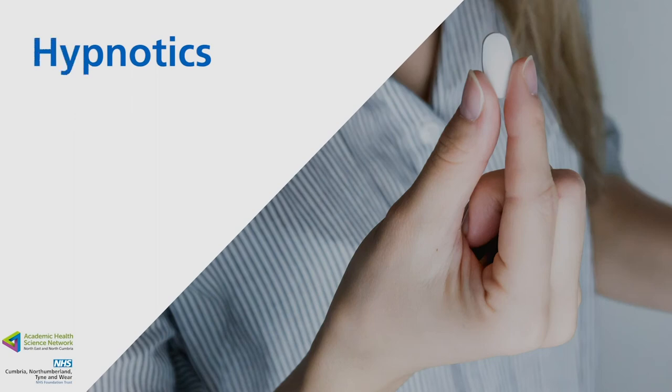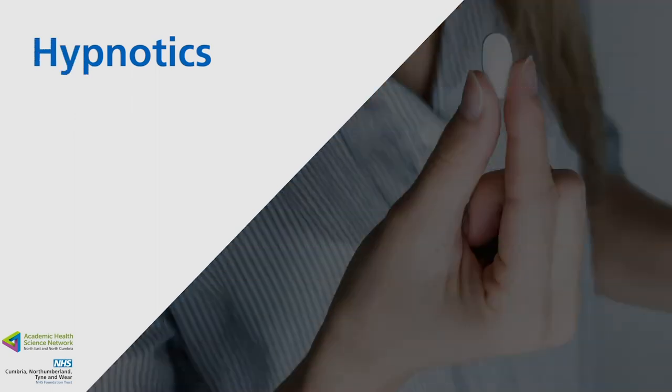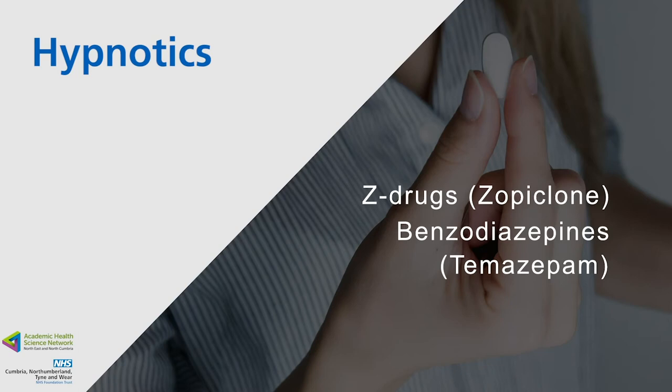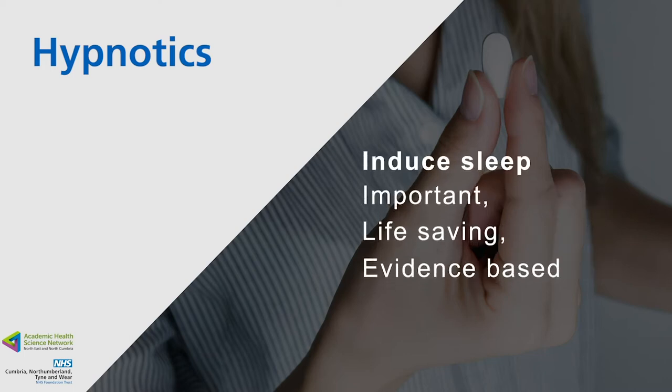Hypnotics — sleeping tablets — can be largely split into two categories: Z-drugs such as zopiclone, and benzodiazepines such as temazepam. Sedating antihistamines such as promethazine can be used to promote sleep, but the evidence base for these drugs in insomnia is slim, and the side effect profiles are often underestimated. Hypnotics can be used to induce sleep, and where there is an urgent need, their use is important, life-saving, and evidence-based.